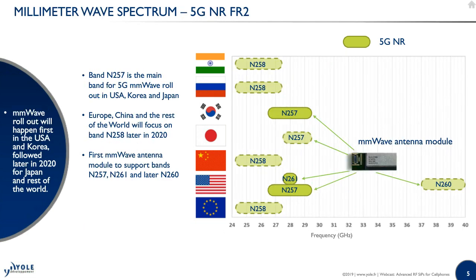The second band is the millimeter wave spectrum — what many people are calling the 'real 5G' — where the frequency is more than 24 GHz, in the range of 24 to 50 GHz. There are different bands: N257, N258, and N260. Band N257 is the main band for 5G millimeter wave rollout in the US, Korea, and Japan. For the rest of the world, it will be band N258, coming mainly next year. The first millimeter wave antenna modules will support bands 257 and 261, and later support the 260 band.